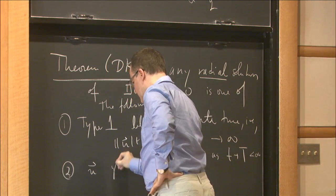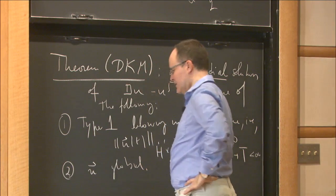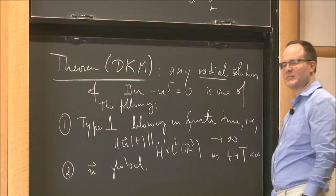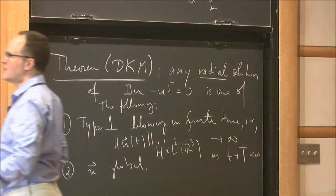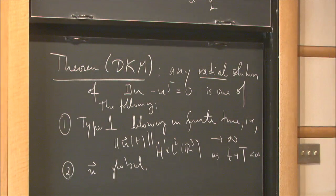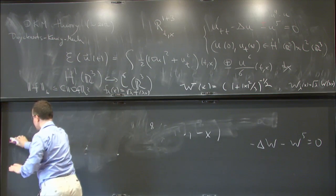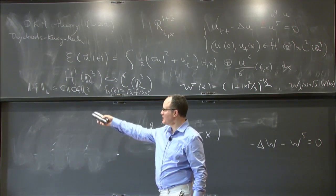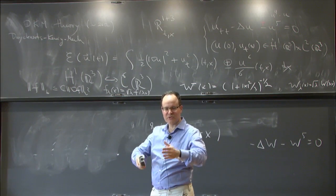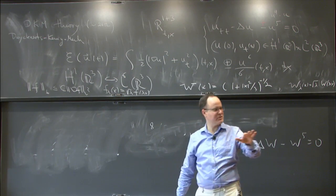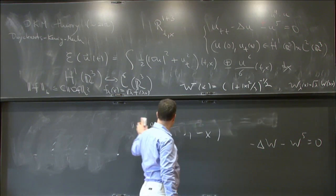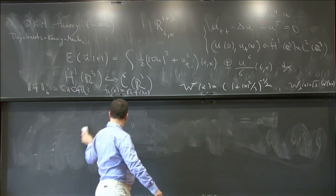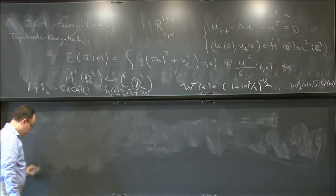Case 2: U is global. If you're global, you have soliton resolution — you look like a sum of W's with the conformal symmetry applied. The Lorentz symmetry is gone because you're in the radial class. The conformal symmetry is only present in the critical equation. So you use W and the conformal (scaling) symmetry. Global solutions scatter to a superposition of rescaled W's plus a free wave.